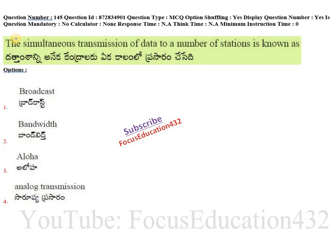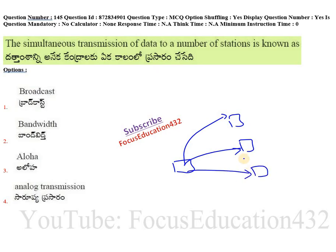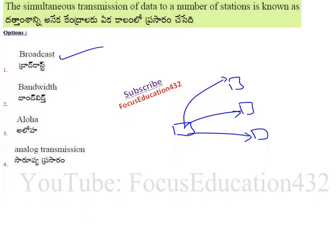Next question: the simultaneous transmission of data to a number of stations. Simultaneously means at the same time — for example, you send data from one computer and it goes to multiple computers at the same time. This is known as broadcast. Broadcast means at the same moment we can transfer data to different machines or stations.